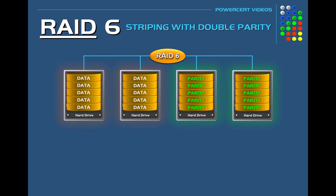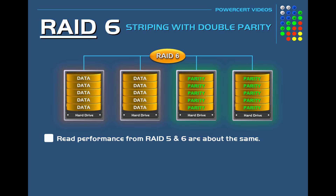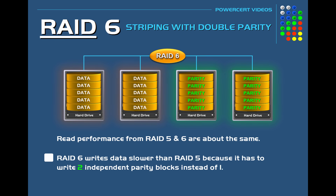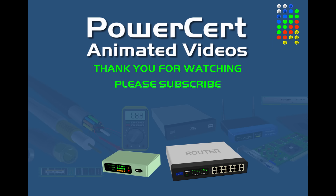It's also important to note that the read performance from RAID 5 and RAID 6 are about the same. But as far as writing data, this is where RAID 6 suffers greatly, because since RAID 6 has to write two independent parity blocks instead of one, the write performance will be a lot slower when compared to RAID 5. So that's the difference between RAID 5 and RAID 6. Thank you for watching and I'll see you in the next video.